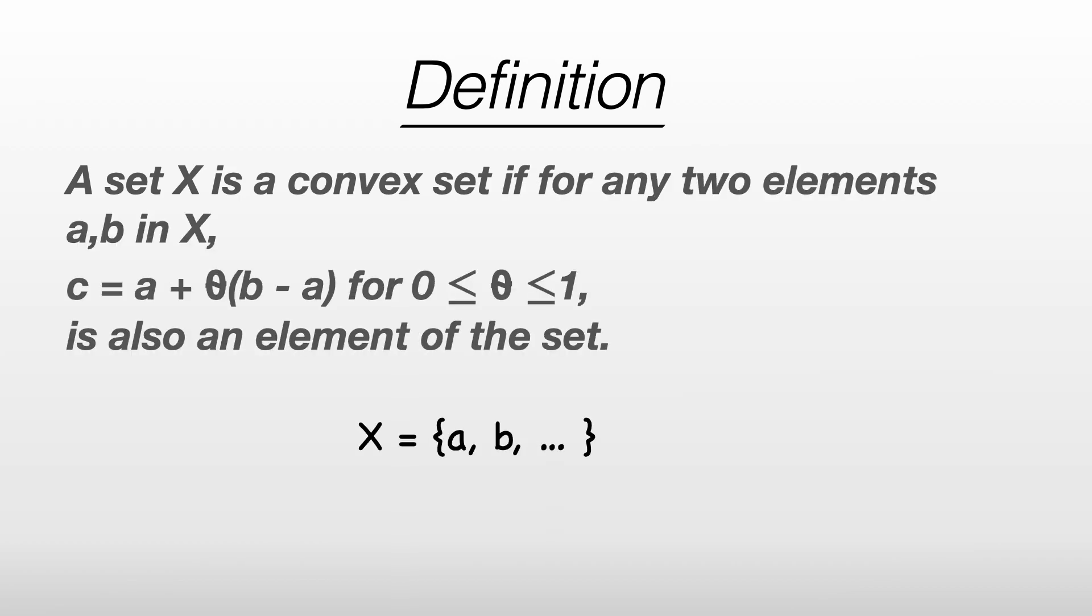So now we're ready to write down the mathematical definition of a convex set. A set x is convex if for any two elements a and b in x, then c, which is a plus theta times b minus a, where theta is a number between 0 and 1, is in the set.